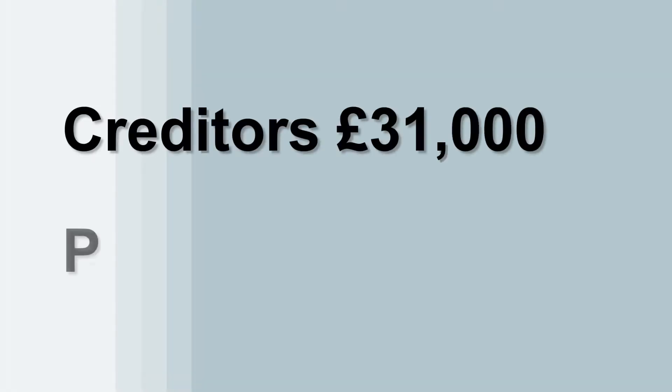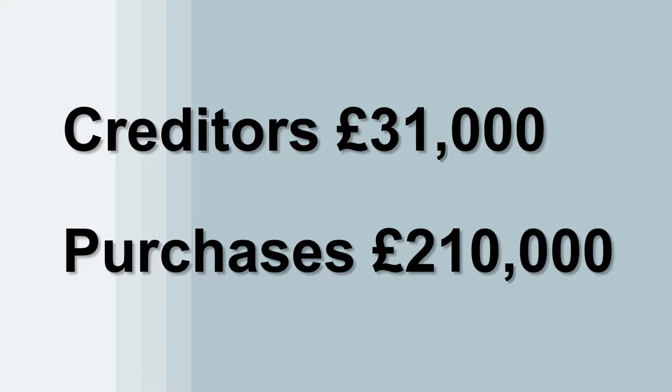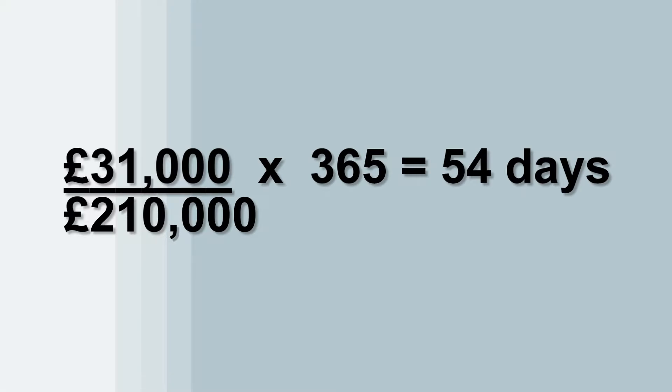Let's look at an example — you may want to get out your balance sheet and plug your own numbers in. Let's assume you've got creditors of £31,000 and purchases of £210,000. So the calculation is £31,000 divided by £210,000 times 365, which equals 54 days. That's 54 days on average it took in that year to pay off your creditors.